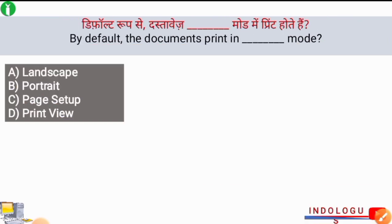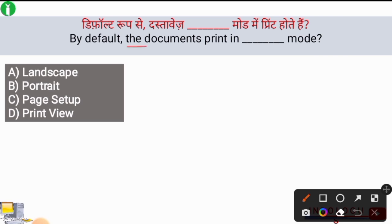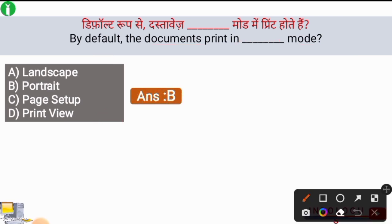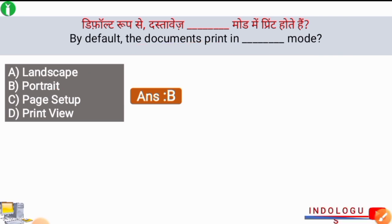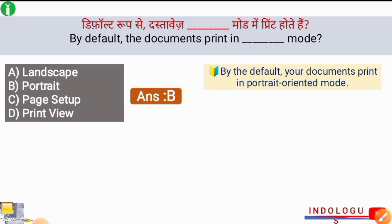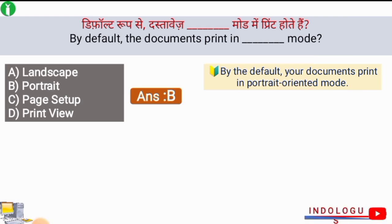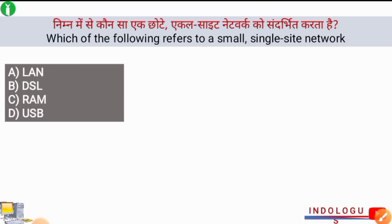Next question: By default, documents print in which mode? The correct answer is option B, portrait. Documents which are printed by default are in portrait mode. So by default, your documents print in portrait-oriented mode in a computer.